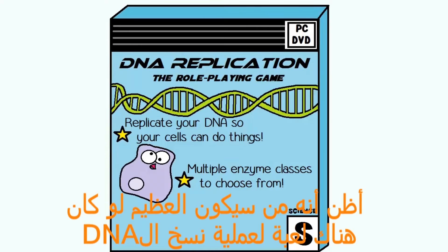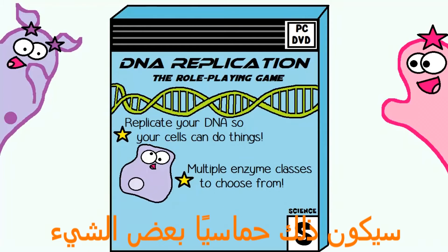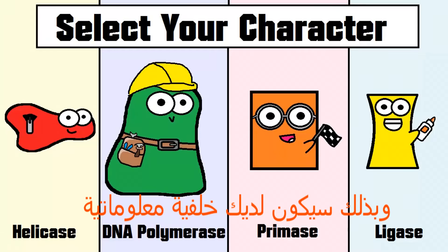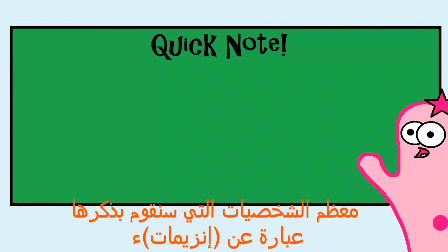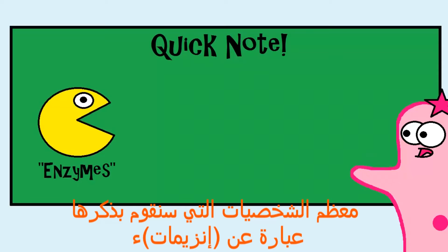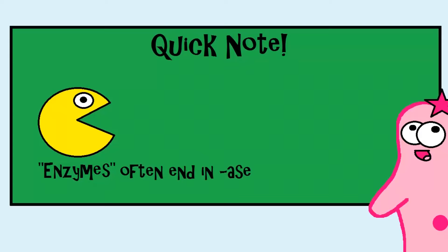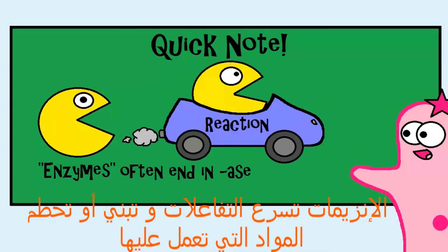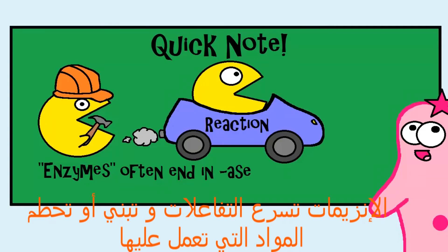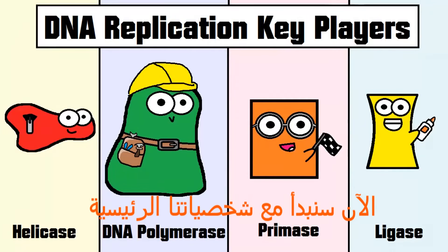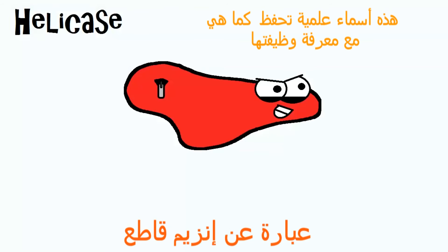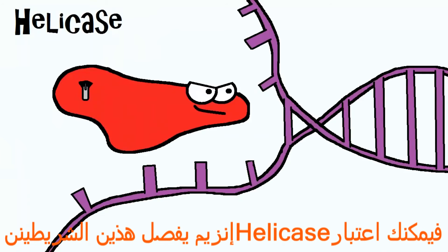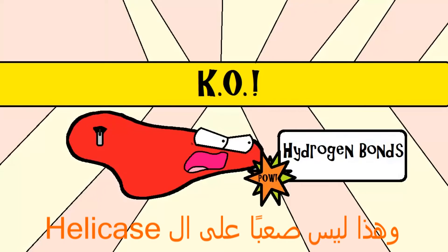I think DNA replication would actually make a great video game — it's actually quite exciting. I'm going to introduce the key players in DNA replication so that you can get some background information. The majority of these key players are enzymes. In biology, when you see something end in A-S-E, it's very possible that it may be an enzyme. Enzymes have the ability to speed up reactions and build up or break down the items that they act on. First: helicase. This is the unzipping enzyme. If you recall that DNA has two strands, you can think of helicase as unzipping the two strands of DNA.